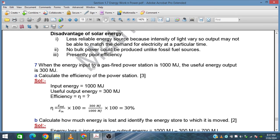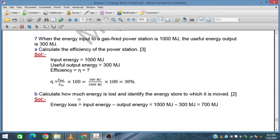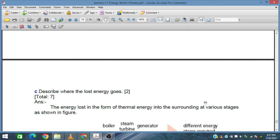When the energy input to a gas-fired power station is 1000 megajoules, the useful energy output is 300 megajoules. Calculate the efficiency: output divided by input gives 30% efficiency. How much energy is lost? Input energy minus output energy: 700 megajoules energy is lost.